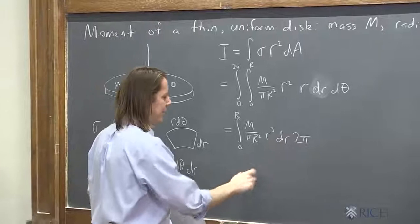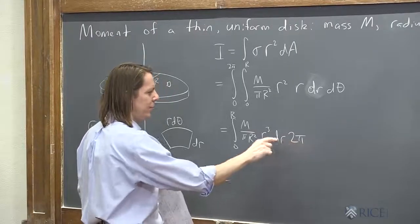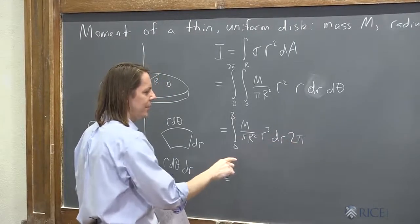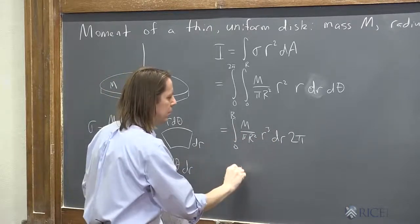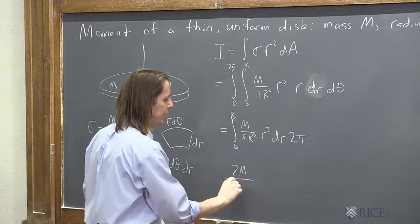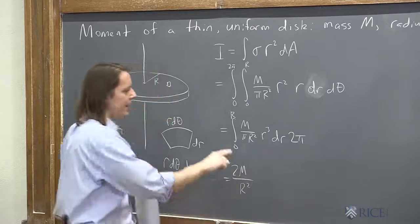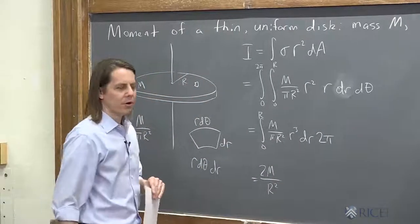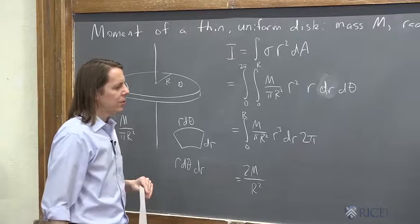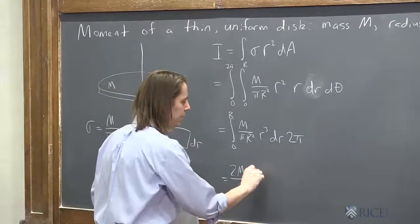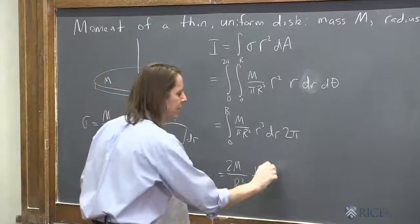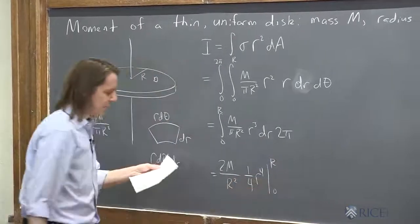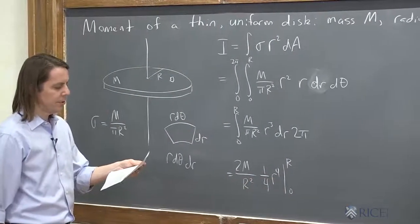So I'm going to go ahead and combine this 2 pi, that pi, and that pi go together. So we're going to go ahead and put these constants outside. We've got 2M over big R squared. And let's go ahead and integrate the R integral. So integral of R cubed is 1 fourth R squared, or R to the fourth. And that one's evaluated from 0 to big R. Let's see if I'm with my notes at all here. Yes, I am. Good.